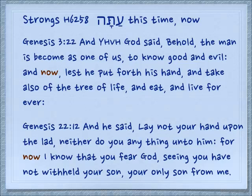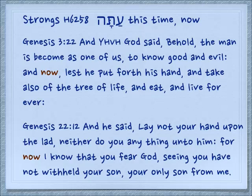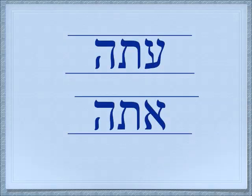Coming from this ayin-tav, 'at a time period,' 'atah' means 'now.' Genesis 3:22: 'And Jehovah God said, Behold, the man is become as one of us, to know good and evil. And now, lest he put forth his hand, and take also of the tree of life, and eat, and live forever' — out of here. Genesis 22:12: 'For now I know that you fear God, seeing you have not withheld your son, your only son, from me.' Again, we don't want to confuse this 'atah' with an ayin with the 'atah' with an alef, which means 'you,' second person masculine singular.